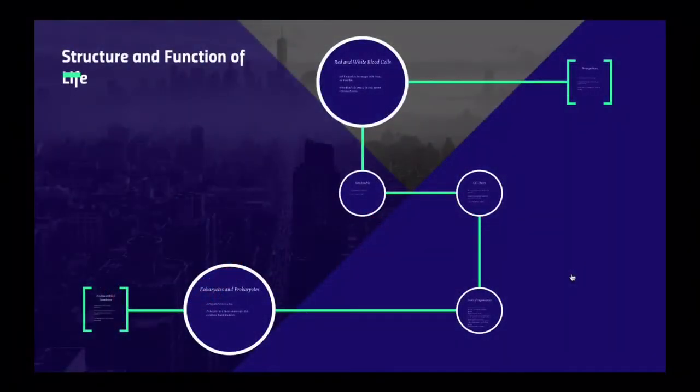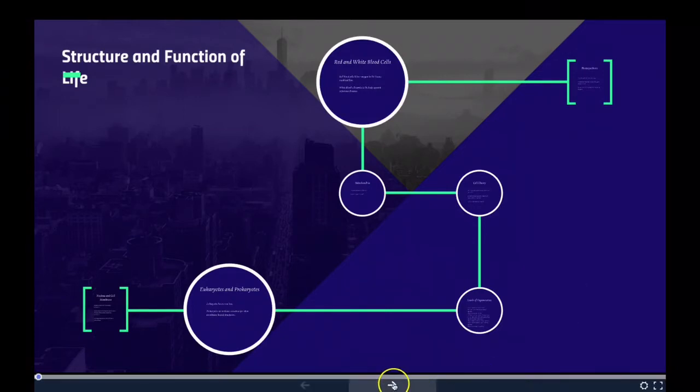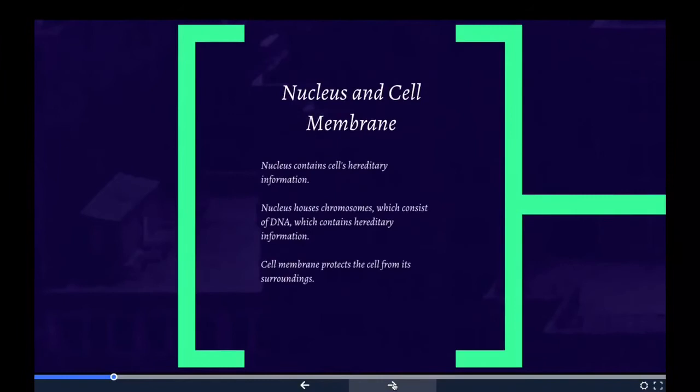Okay, we're going to take a look at structure and function of life, so there's quite a bit within this. Let's get started. We start with the nucleus and the cell membrane. The cell nucleus is a membrane-bound structure that contains the cell's hereditary information and controls the cell's growth and reproduction.